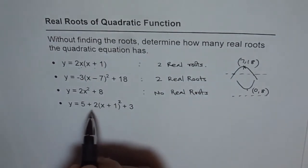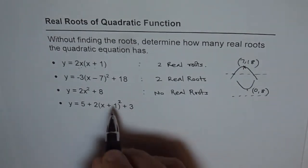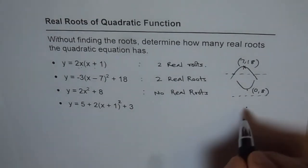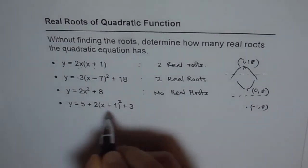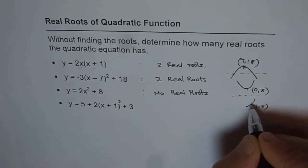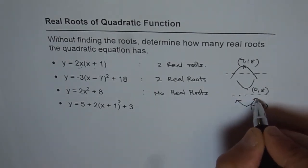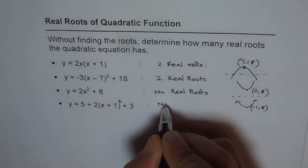In the last case 5 plus 3 is 8. So that means we have the vertex at minus 1, 8. And since 5 plus 3 is positive 8, the parabola is going to open upwards, resulting in 0 roots. So no real roots.